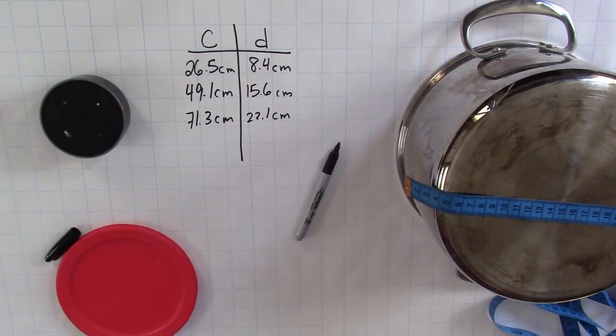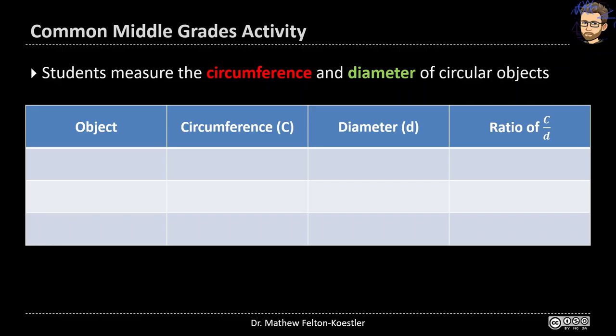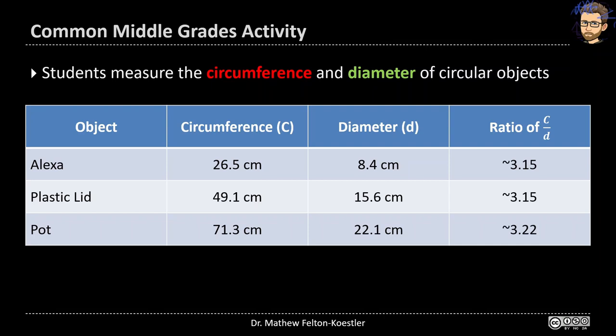Alright, so I will go do some calculations with these numbers. We're back. I measured an Alexa, a plastic lid, and a pot, and you can see the measurements I have here. And when I go ahead and do the calculation, I get these values which aren't perfect, but in terms of measurement error they're pretty close to the value of pi. And so we might start talking about why that is and what's going on.